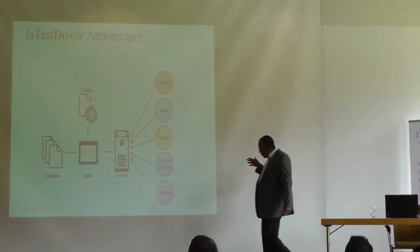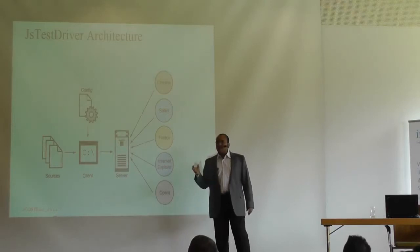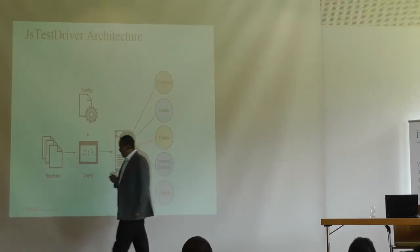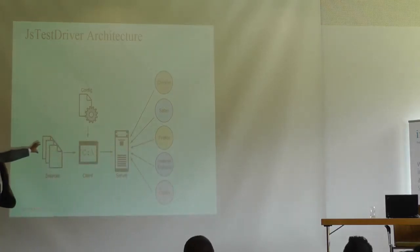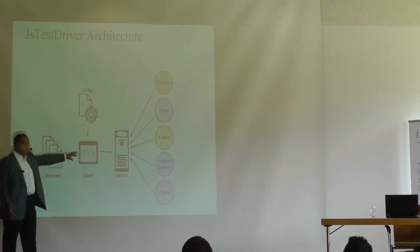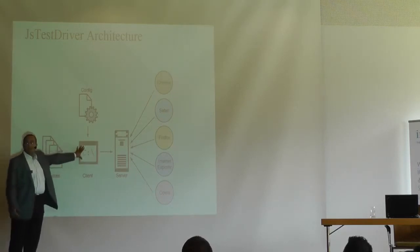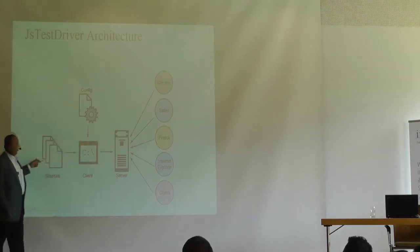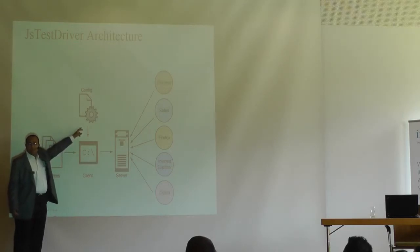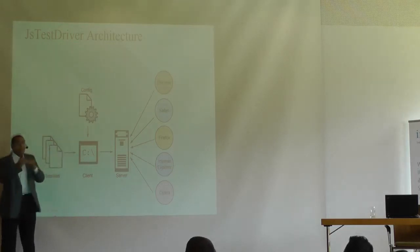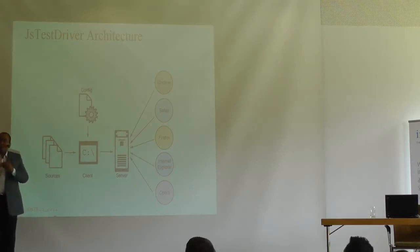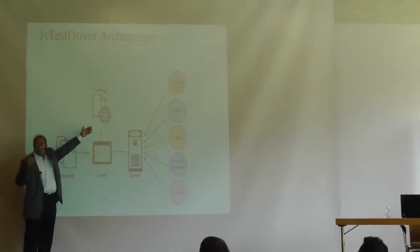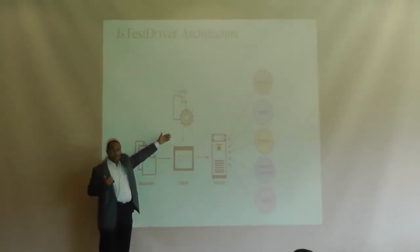This is the architecture of JSTD. I want to use the architecture to understand how JSTD works behind the scenes. JSTD consists of two main parts. The first part is a client part, which is a command line. The command line has two main inputs. The first input is a configuration file where you list the JavaScript files you want the engine to load in sequence — usually source files before test files.